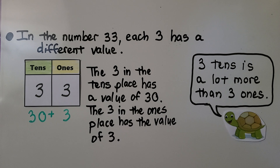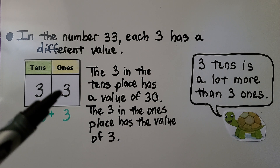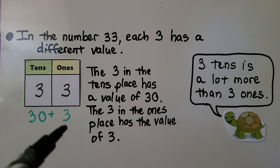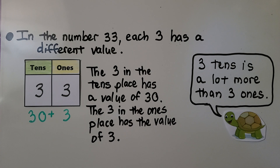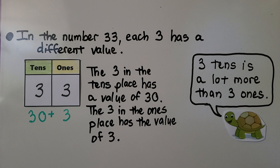In the number 33, each 3 has a different value. The 3 in the tens place has a value of 30, and the 3 in the ones place has a value of 3. Three tens is a lot more than 3 ones. We're using the same digit, 3, but it has a different value depending on which place it is in.